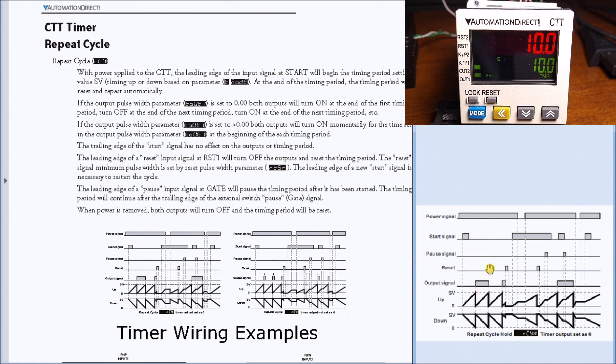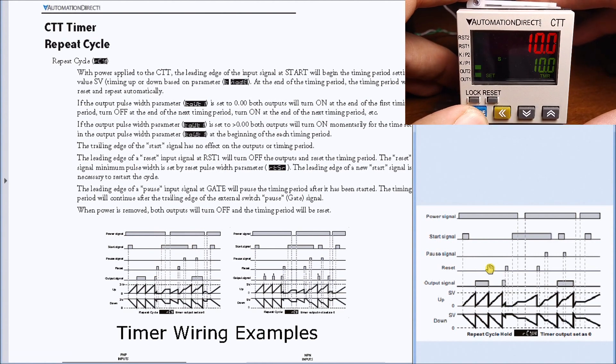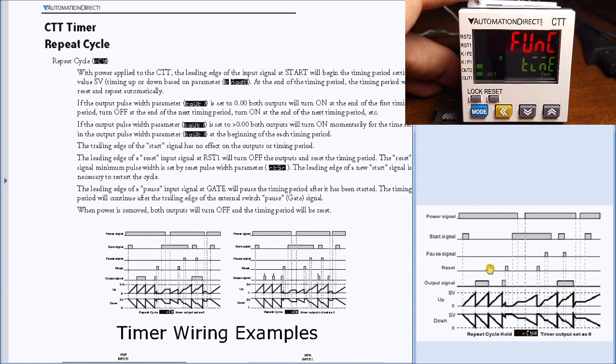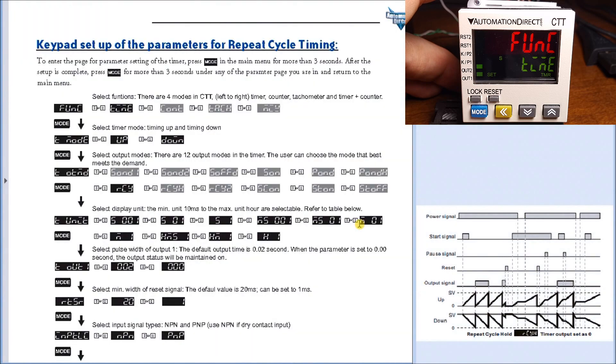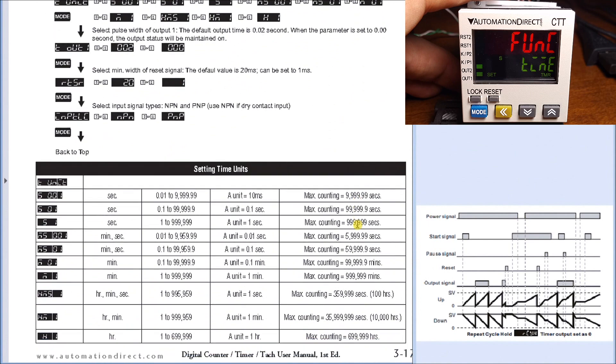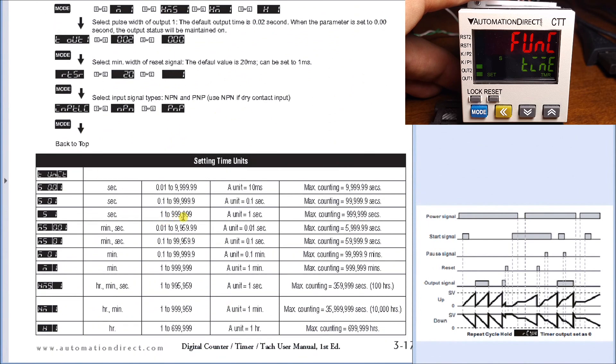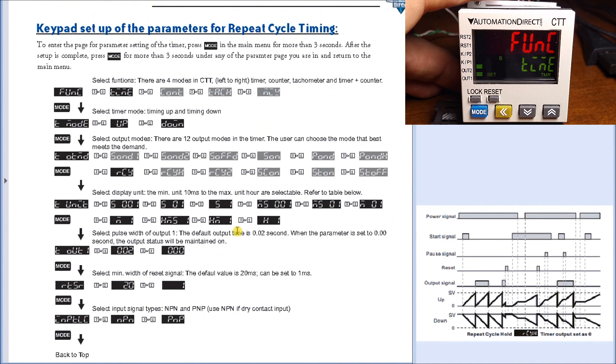So looking at the timer itself, if we actually hit and hold the mode key, we will actually come into the function, which will be timer. And that we can see on the manual here after we can look at the timing wiring examples. And then here's our keypad setup that we're going to. And then there's my set time units. So it's only two pages of the manual to completely set up this unit for your cycle timer.